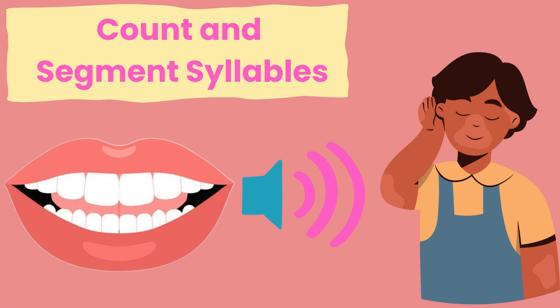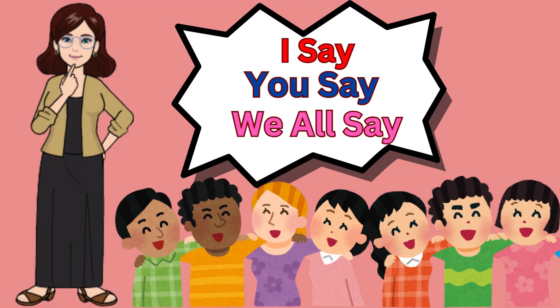Example: I say insect. You say insect. We say insect. Insect — how many syllables? Two. I say center. You say. We say center. Center — how many syllables? Two.